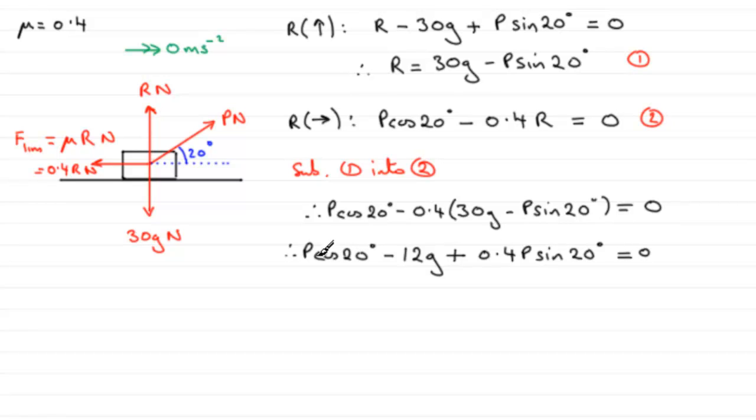So we've got two terms here that contain P, and one that doesn't. So I'm going to add 12g to both sides. And I'm going to factorise by bringing P out as a common factor across this term and this term. So we're going to have P multiplied by the cosine of 20 degrees, and then plus for this term here, 0.4 sine of 20 degrees. And then if I add 12g to both sides, we get that equals 12g.